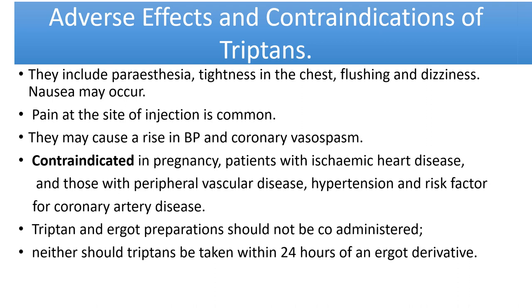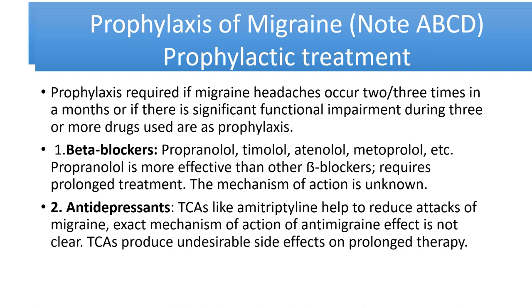Triptans should not be taken within 24 hours of an ergot derivative. Prophylaxis of migraine is required if attacks occur two to three times per month or if there is significant functional impairment. Beta-blockers such as propranolol, timolol, atenolol, and metoprolol can be given; propranolol is more effective than other beta-blockers and requires prolonged therapy. The mechanism is not fully known.